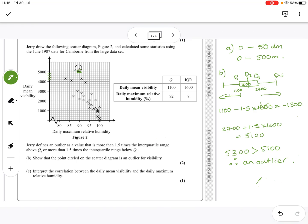Okay, interpret the correlation. Well I've kind of said that, there's a negative correlation, but it's interpret the correlation between the daily mean visibility and the daily maximum relative humidity. So then we need to say,